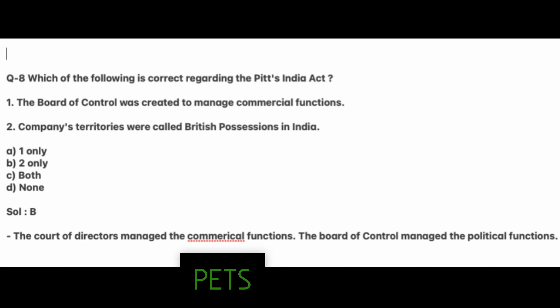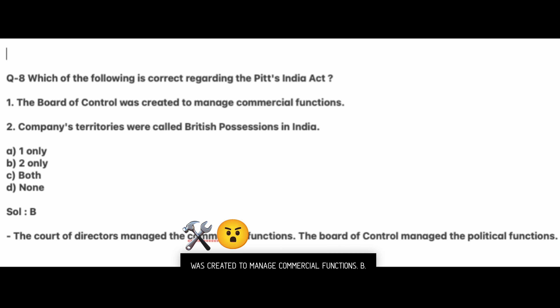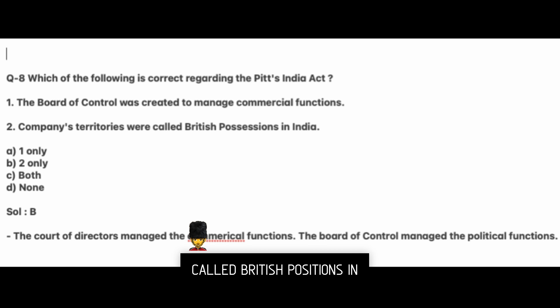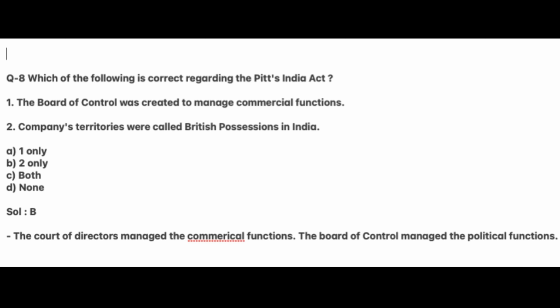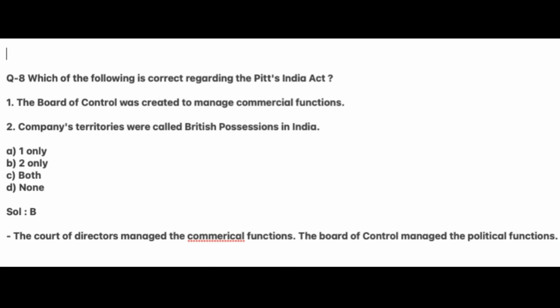Next: Which of the following is correct regarding the Pitt's India Act? One, the Board of Control was created to manage commercial functions. Two, the company's territories were called British possessions in India. Answer B: The Court of Directors managed the commercial functions; the Board of Control managed the political functions.